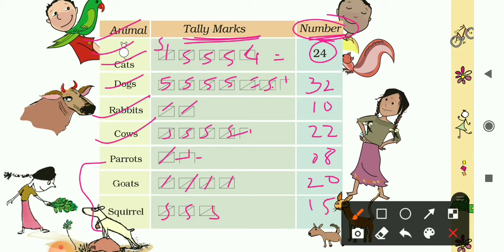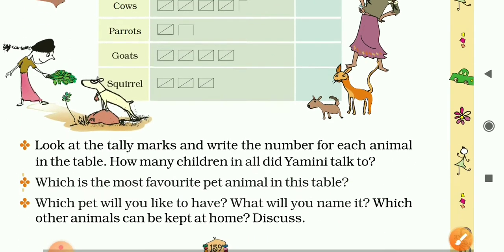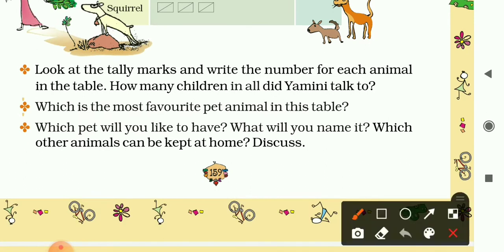Now we have found all the numbers. At last, add the numbers of all animals: 24, 32, 10, 22, 8, and so on. The sum is 131. So Yamini talked to 131 students in all.